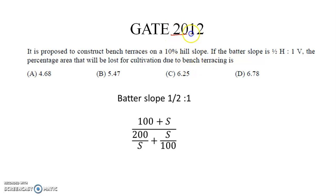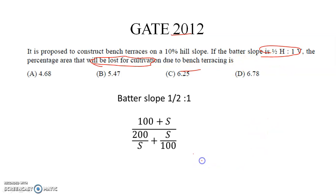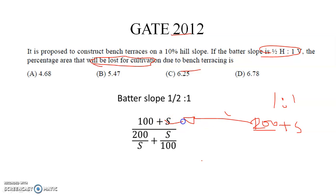First, this is a GATE 2012 question asking for the area lost for half raised to 1. Using the direct formula for area lost, the numerator stays the same but the denominator changes — for 1 raised to 1 it is 200 plus S, and for half raised to 1 it becomes 100 plus S. Putting S equals 10 gives answer B. It is as simple as this.